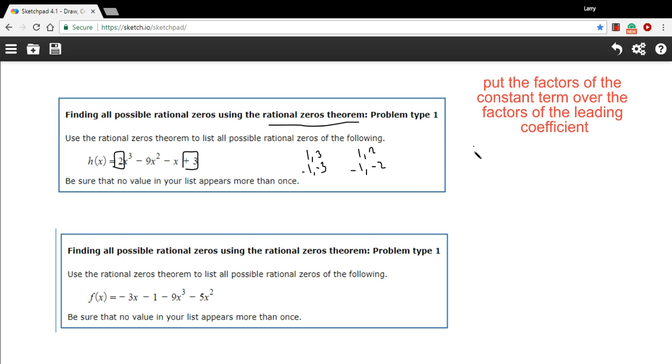I could also have 1 over -1. So these are all going to be positive and negative. So 1/1 is a possible factor or zero. And we could have 1/2.